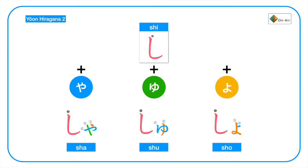The second group we have shi plus ya, yu, yo. So we pronounce them together as sha, shu, sho. Again, sha, shu, sho.